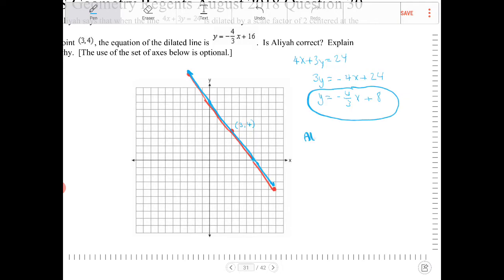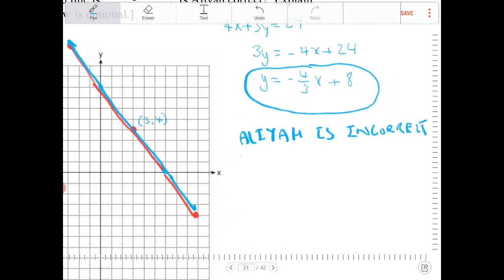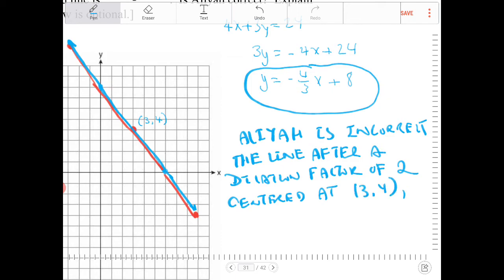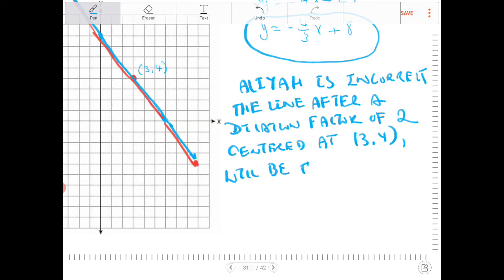Aliyah is incorrect. The line after dilation by a factor of 2 centered at (3,4) will be the same line as the original, which is y equals negative 4 thirds x plus 8.